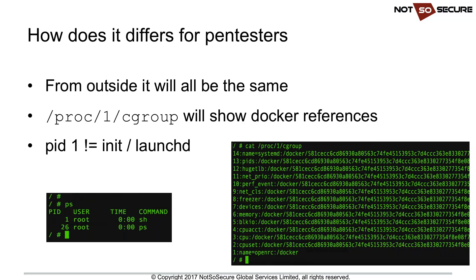From a pentester's perspective, if an application is hosted in Docker versus a VM, you won't know the difference until you get onto the system. Once inside, the weird stuff starts: PID 1 in Unix is supposed to be init, launchd, or systemd, but in Docker it's the actual process being run — a shell, nginx, Apache, etc. Looking at /proc/1/cgroup you'll see Docker references, indicating you're inside a container.